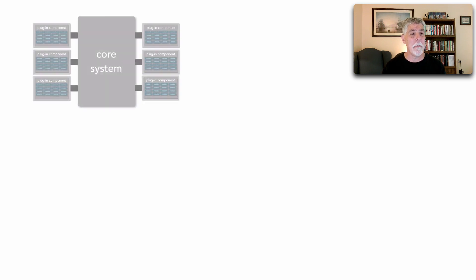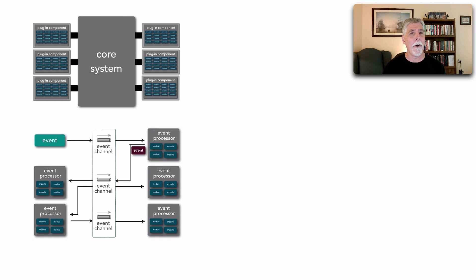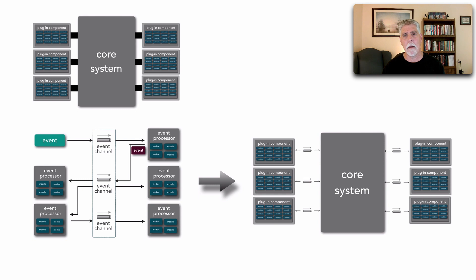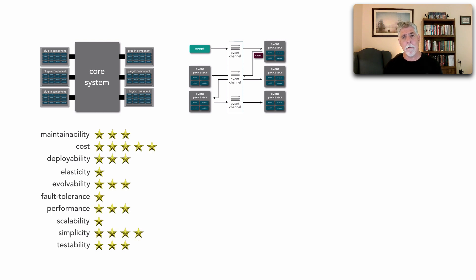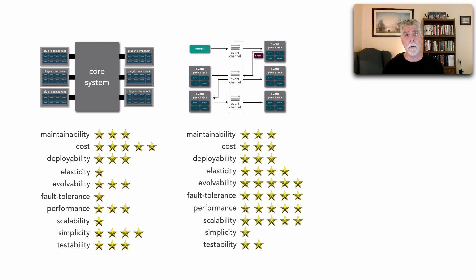What I'd like to do is dive into event-driven microkernel to give you an example of the analysis and the trade-offs that go into forming hybrids, especially with the star ratings. We're going to combine event-driven architecture along with microkernel to create an event-driven microkernel architecture. When we do that, the core system communicates to the plugins through events and messaging. If we take a look at the star ratings identified in our book, Fundamentals of Software Architecture, we can see all of the various quality characteristics supported by microkernel and by event-driven, and when we form a hybrid, we can analyze what we're gaining and what we may be losing.